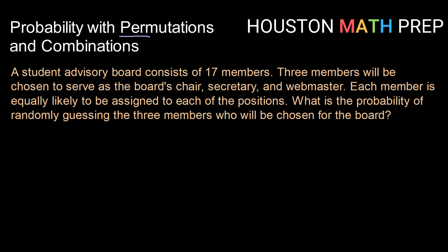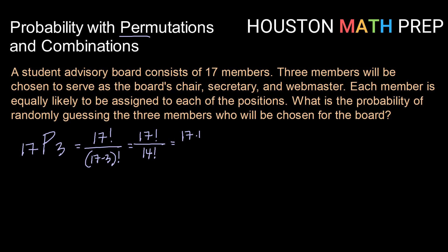So let's start with the number of ways that can be accomplished. If we have 17 members on the advisory board and we need to take a permutation of groups of three, that would be 17 factorial divided by (17 minus 3) factorial — so 17 factorial divided by 14 factorial, or 17 times 16 times 15 times 14 factorial. The 14 factorials cancel out, leaving 17 times 16 times 15, which equals 4,080. So there are 4,080 ways to choose a chair, a secretary, and a webmaster.